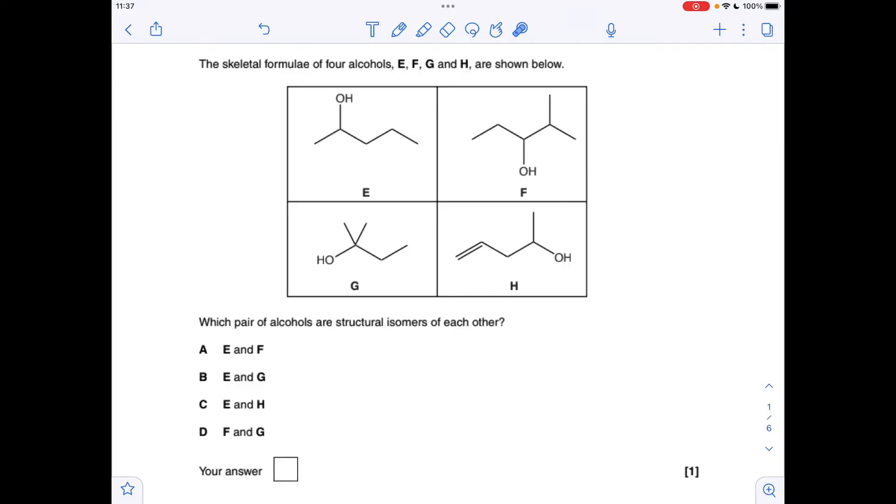Okay, so make a start. Which pair are structural isomers of each other? Basically they have the same molecular formula, so we'll just quickly work out the molecular formula of these. You can see E and G have the same molecular formula, so they are the structural isomers.